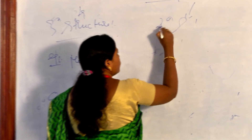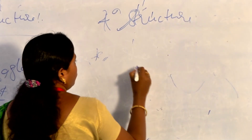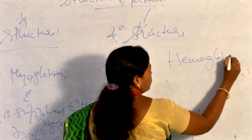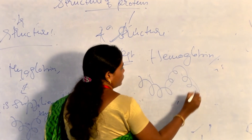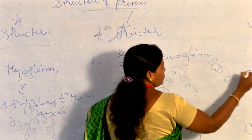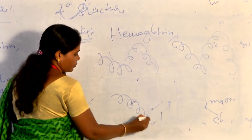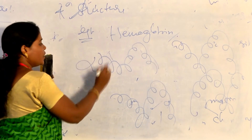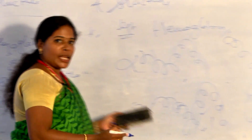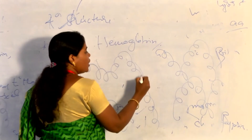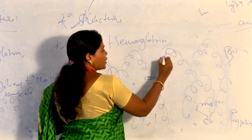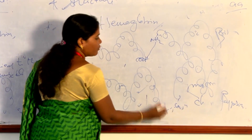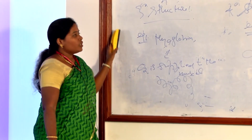For quaternary structure, the example is hemoglobin. It has two alpha subunits and two beta subunits. One side is carboxylic acid and the other side is amino group, and bonding occurs between the amino group and the carboxylic group. This is the example of quaternary structure.